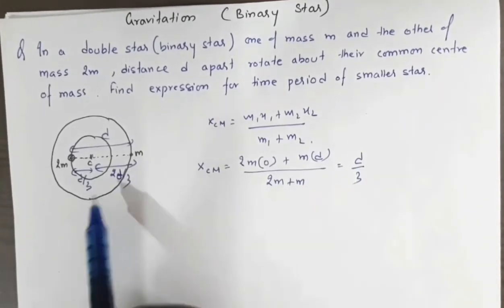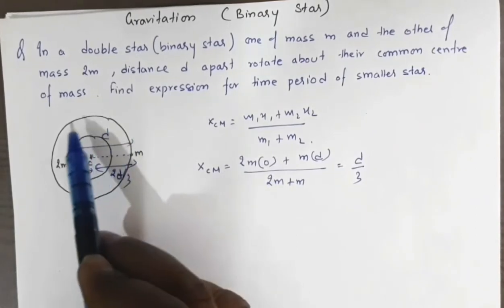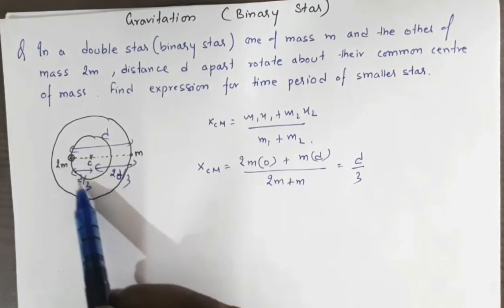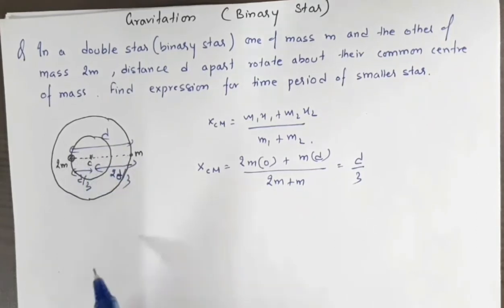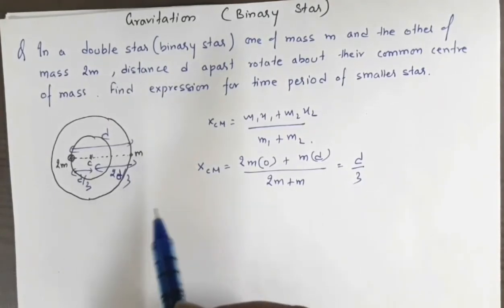This means one mass is rotating in a circle of radius 2d/3, while the other mass is rotating in a circle of radius d/3.